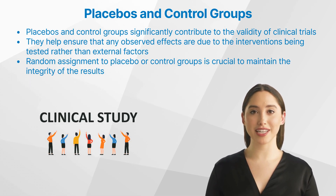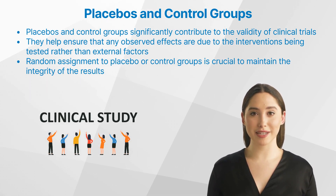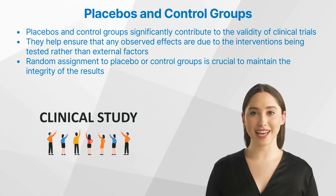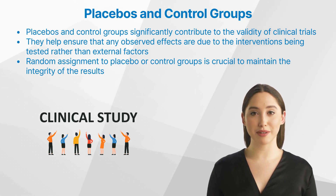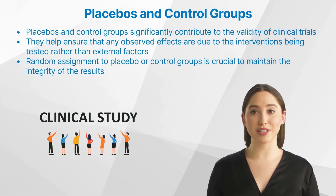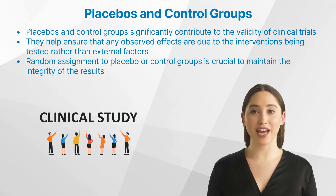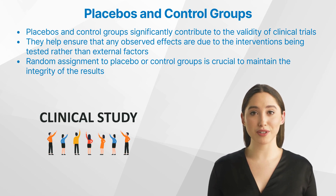Placebos and control groups significantly contribute to the validity of clinical trials. They help ensure that any observed effects are due to the interventions being tested rather than external factors. Random assignment to placebo or control groups is crucial to maintain the integrity of the results. It ensures that any differences between participants, such as age or health status, are distributed evenly among the groups, reducing bias.